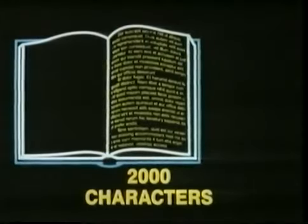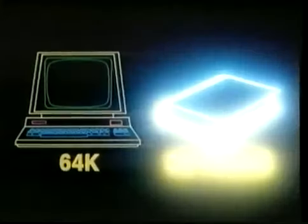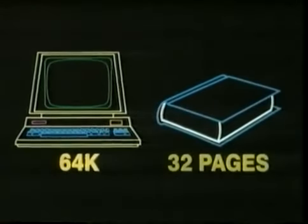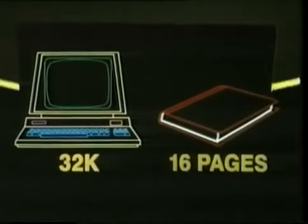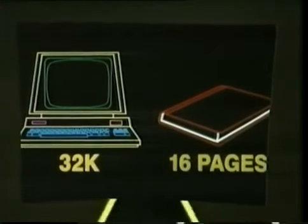This may sound a lot, but it isn't. The average page of a book contains about 2,000 characters — it's a 2K page. So even a 64K computer can only store as many characters as a 32-page book, and a 32K computer only as many as a 16-page book. Although, of course, a computer can do a lot more with its characters than a book can. But that's another story.